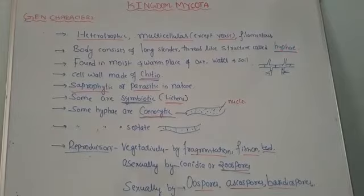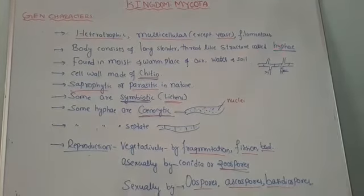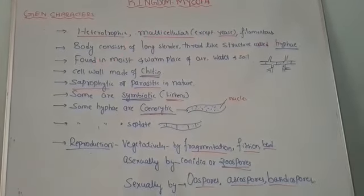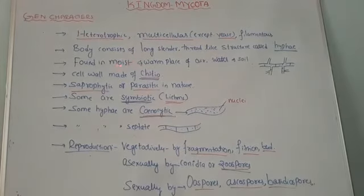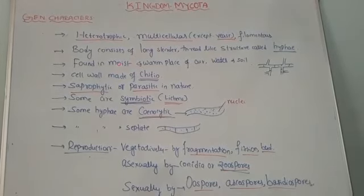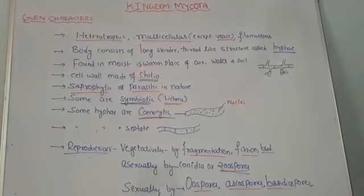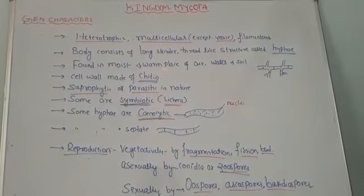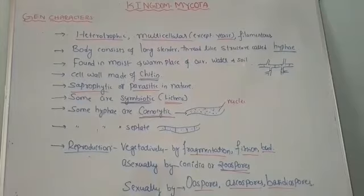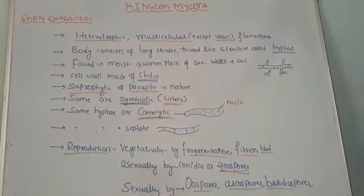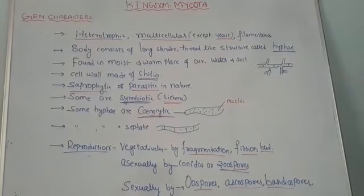A number of hyphae grouped together form a structure called mycelium, which is the plant body of fungi. With reference to their occurrence, they are found in moist places where plenty of moisture is present. They also grow in warm conditions — in soil, in water, and even in air — as moist and warm environments promote the luxuriant growth of fungi.